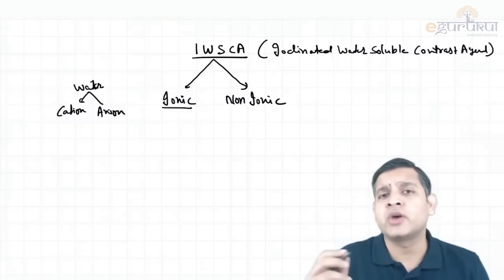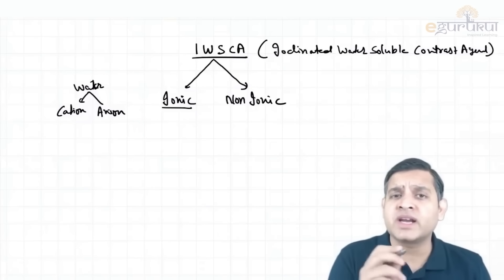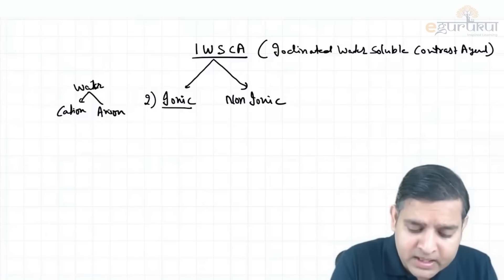It is so simple. Every ionic molecule will give one cation and one anion, that means two particles.